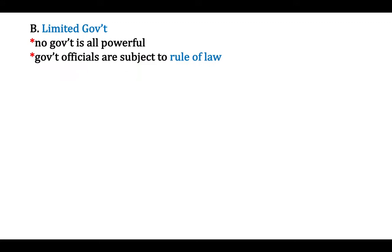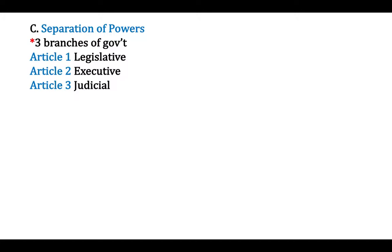Our second theme is limited government. Our U.S. government is limited in its power through the idea that we have three separate branches of government. Each of those three branches has specific powers — this is also the idea of separation of powers. Our government is not all-powerful, despite the fact that it seems like that sometimes. The way our Constitution is written reflects the principle of limited government, in the sense that the central national government's power, as well as the state governments' power, is limited.